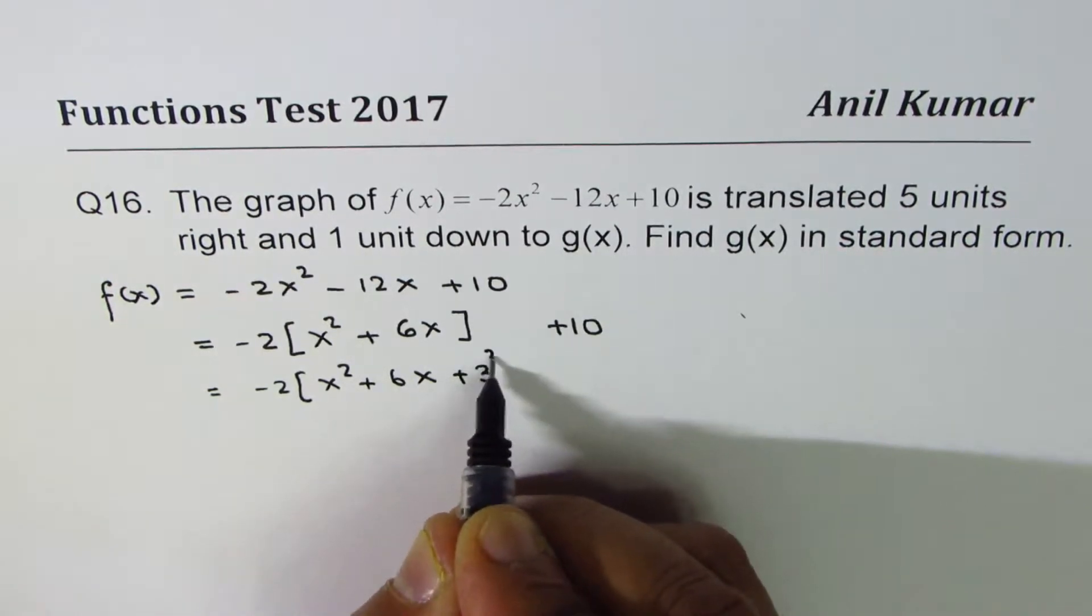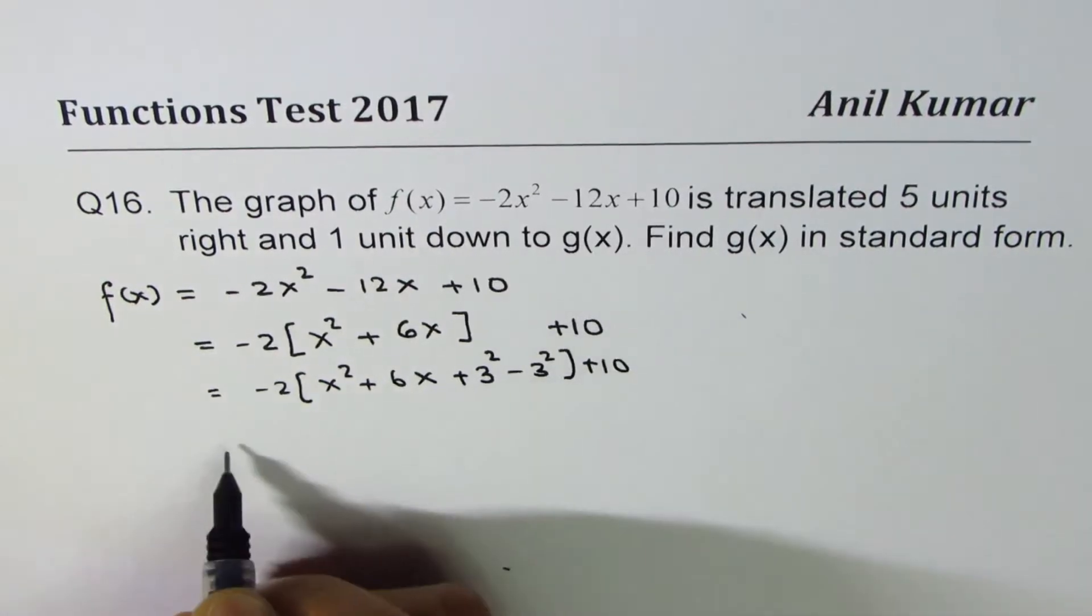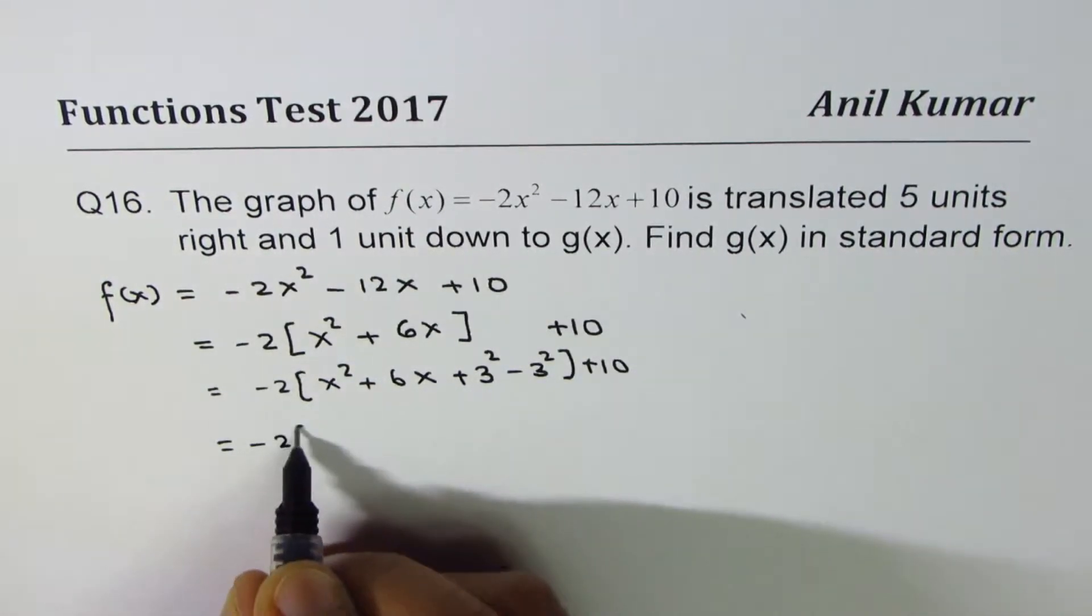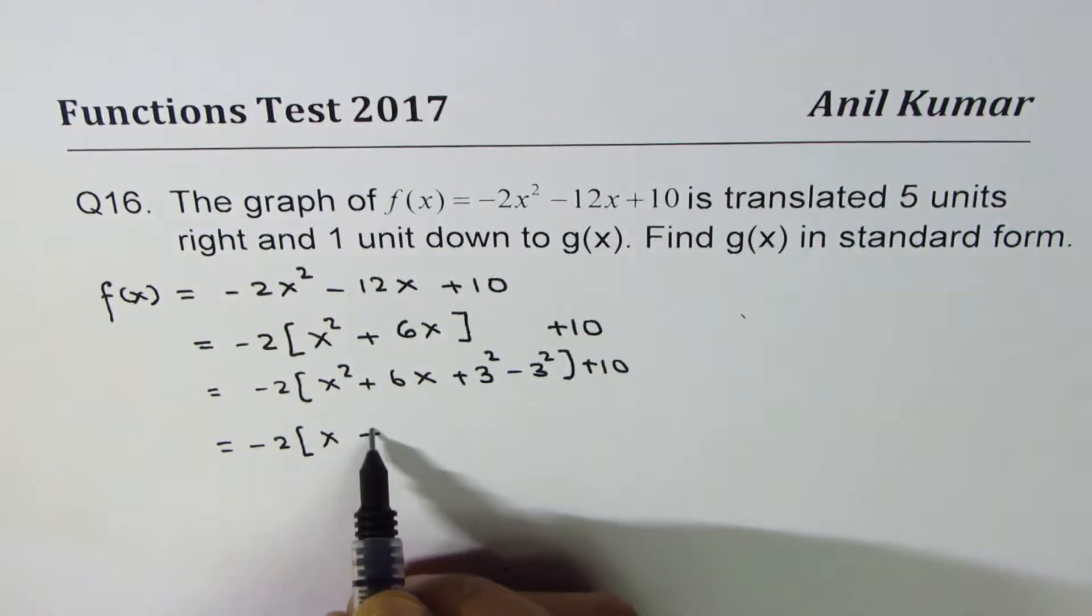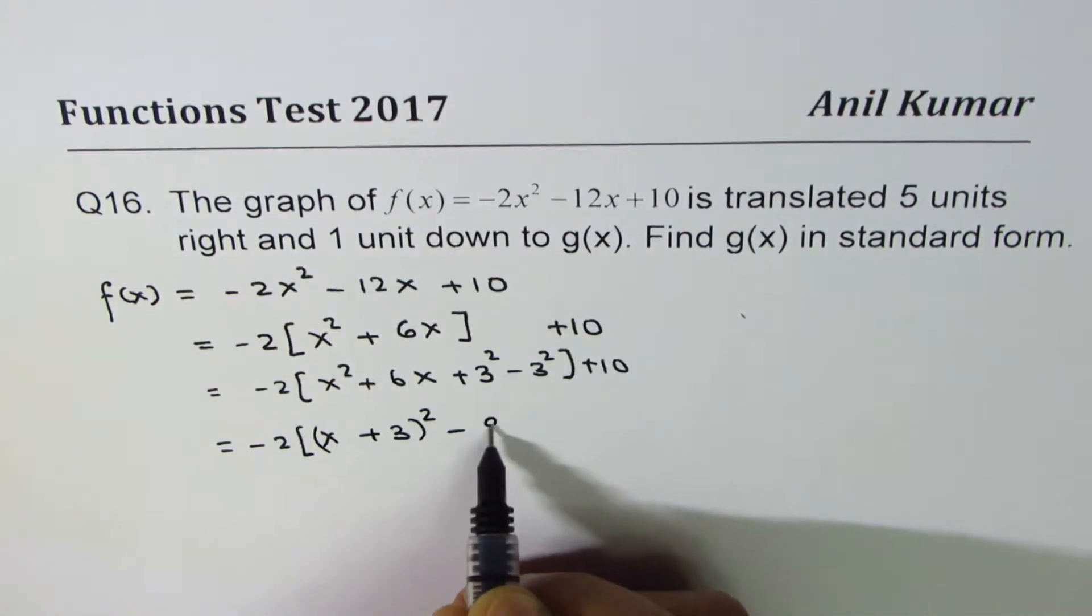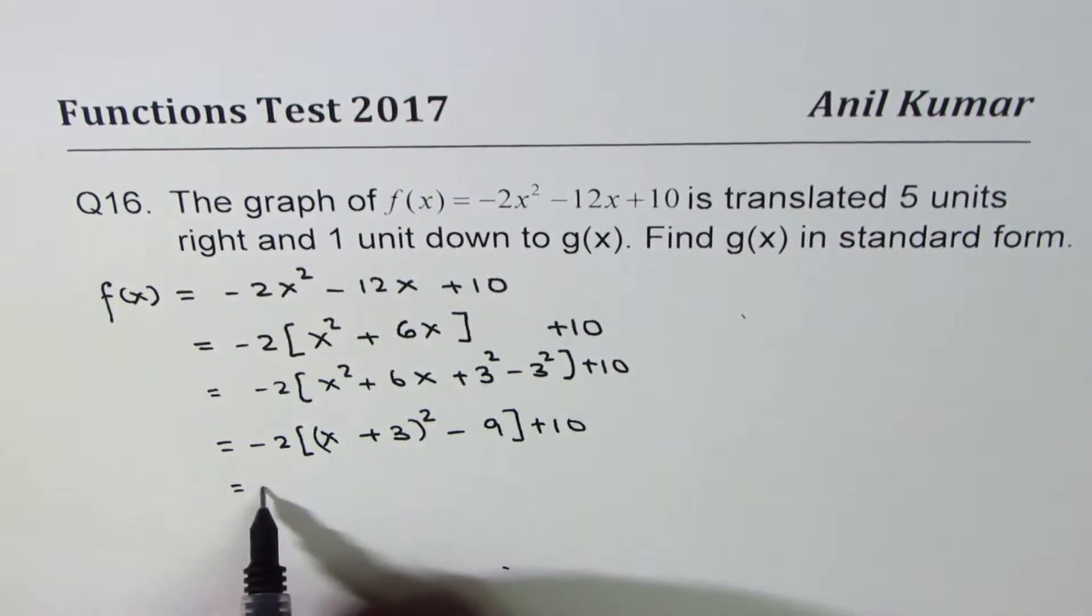Now we'll do x² + 6x. Half of 6x is 3, so we'll add and subtract 3² to get -2[x² + 6x + 9 - 9] + 10. These three terms form a perfect square, so we have -2[(x + 3)² - 9] + 10.